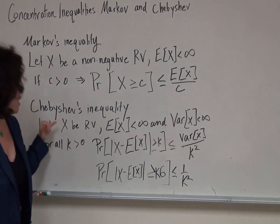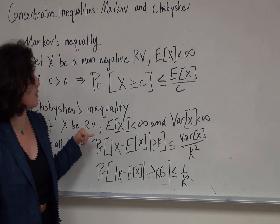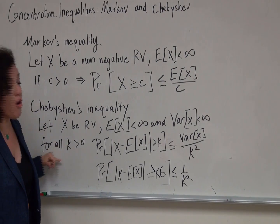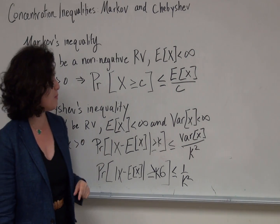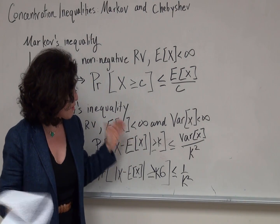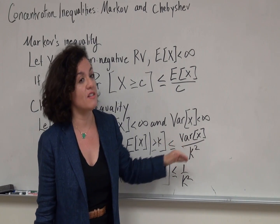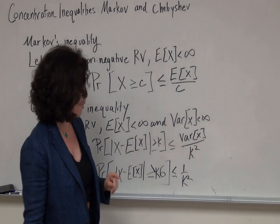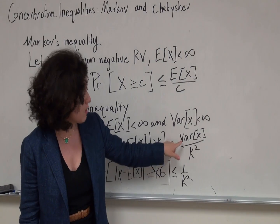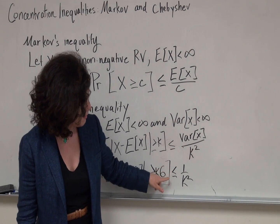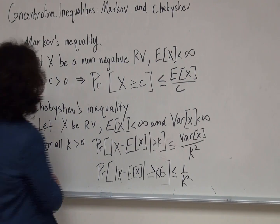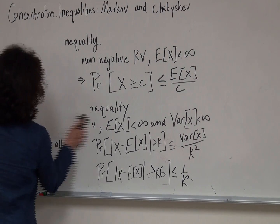Similarly, for Chebyshev's inequality, we have a random variable — which in this case doesn't have to be non-negative — with finite mean and finite variance. Then for all constants k greater than zero, the probability that x deviates from the mean by more than k is bounded by the variance divided by k squared. Sometimes you will see this inequality given in terms of the standard deviation sigma, the square root of the variance, in which case the probability is bounded by 1 divided by k squared.